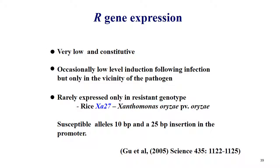R gene expression is very low and constitutive. Occasionally there is low-level induction following infection, but only in the vicinity of the pathogen. It is rarely expressed in resistant genotypes. In rice, XA27 — a gene of Xanthomonas oryzae pv. oryzae — susceptible alleles have 10 bp and 25 bp insertions in the promoters.